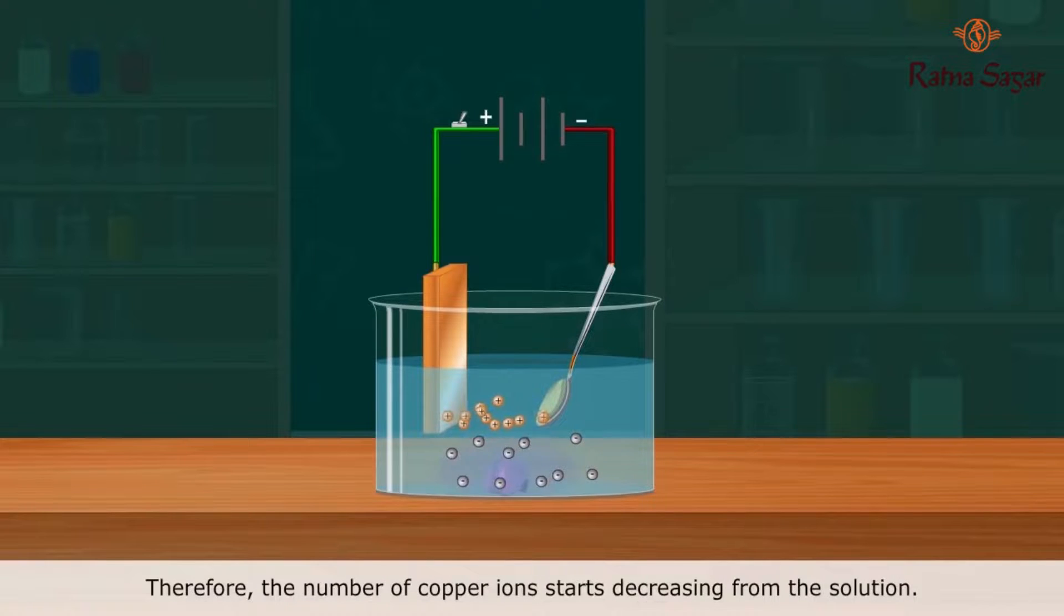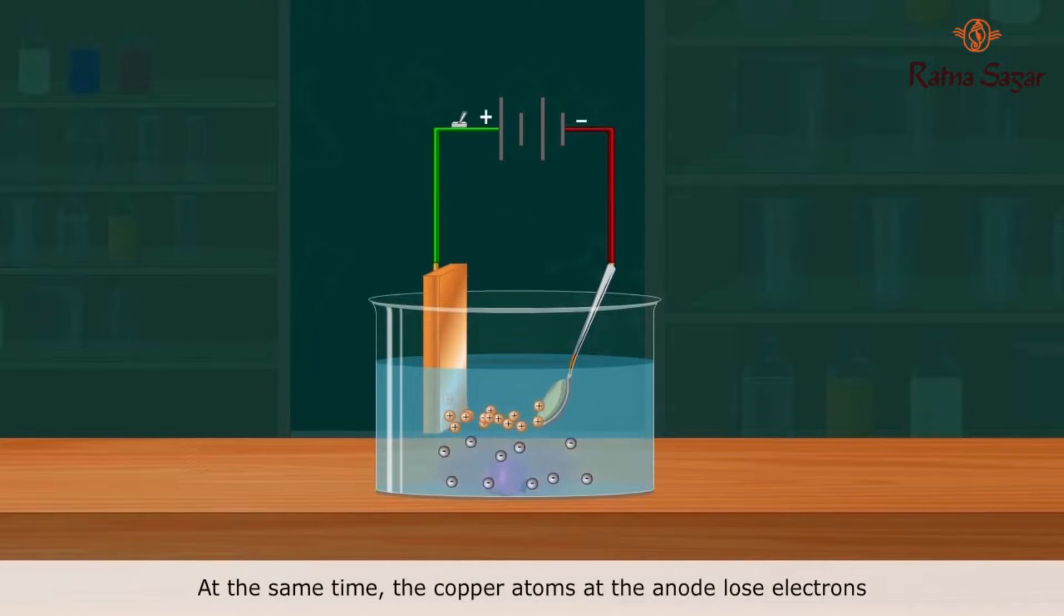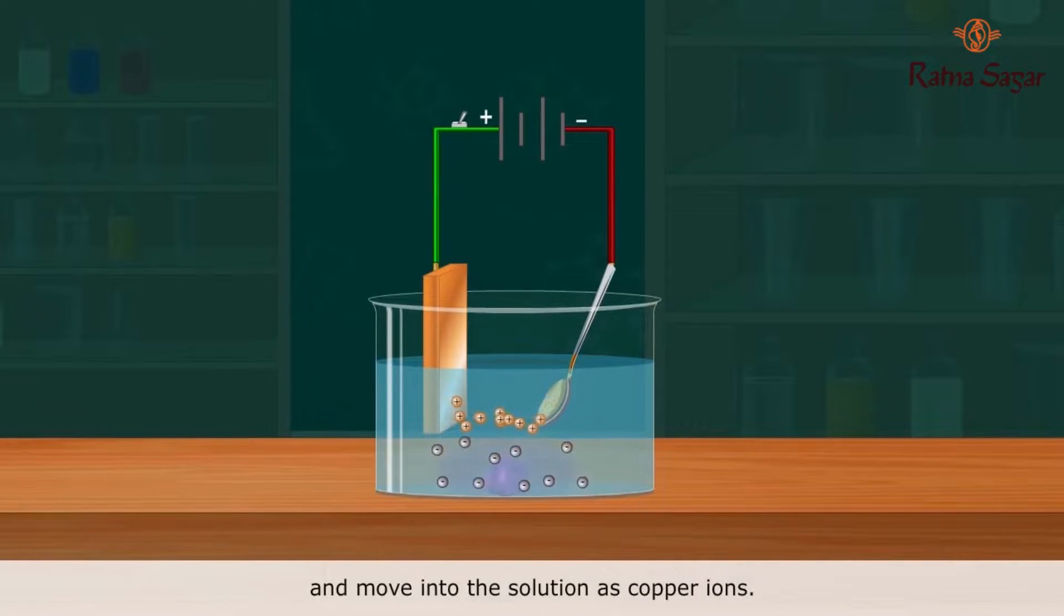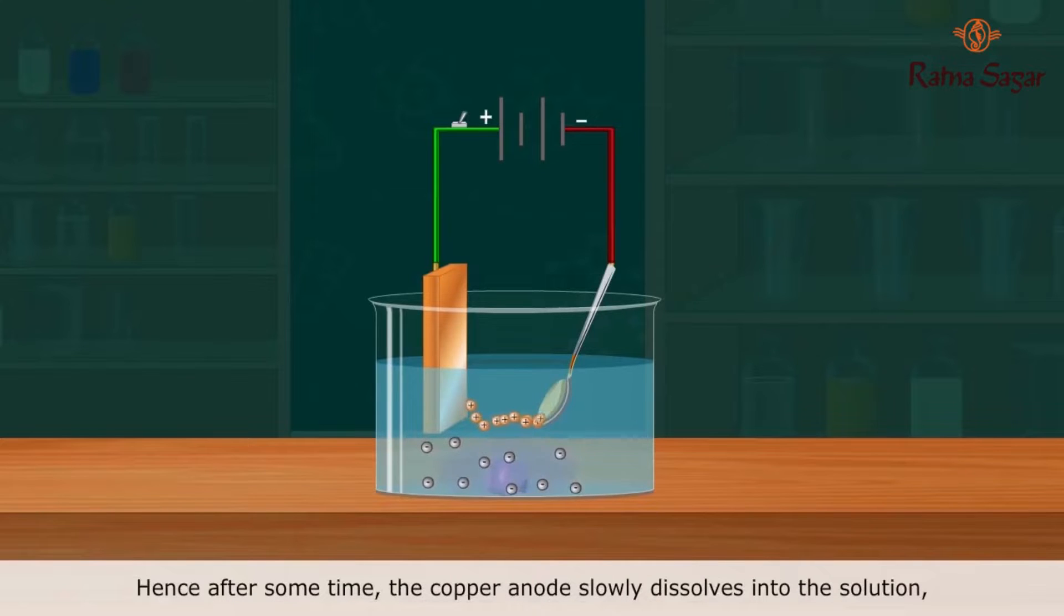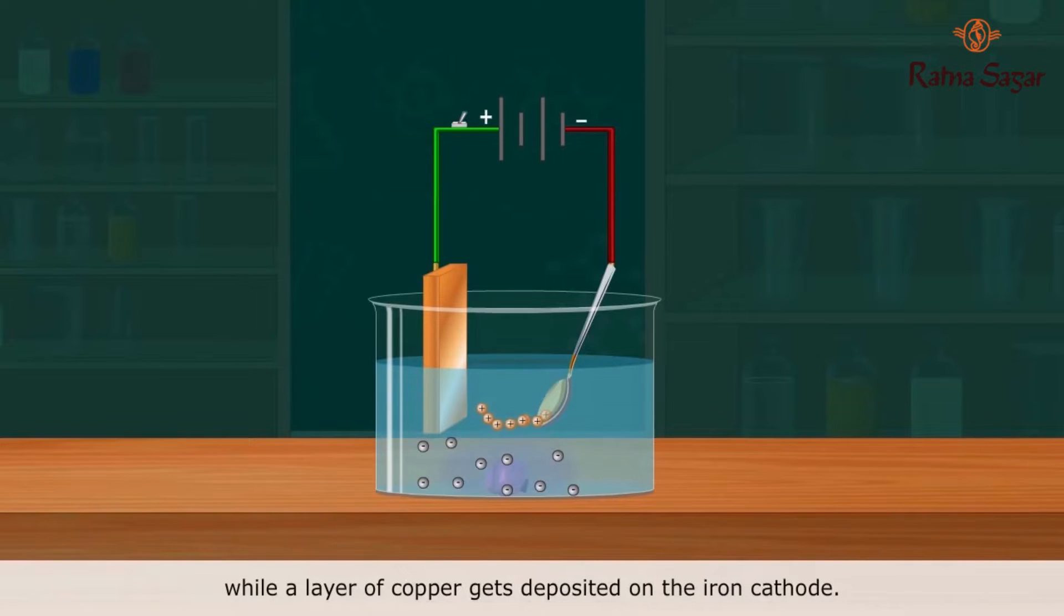Therefore, the number of copper ions starts decreasing from the solution. At the same time, the copper atoms at the anode lose electrons and move into the solution as copper ions. Thus, the copper loss to the cathode is restored by the anode. Hence, after some time, the copper anode slowly dissolves into the solution while a layer of copper gets deposited on the iron cathode.